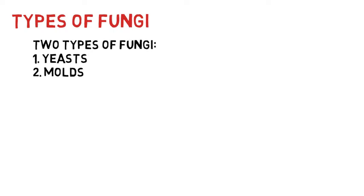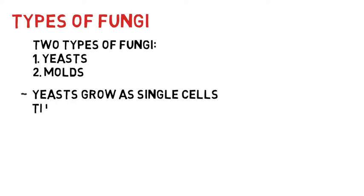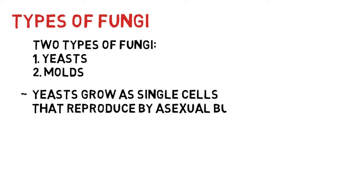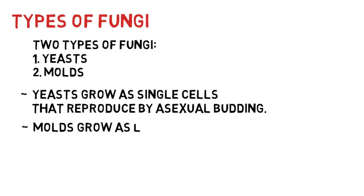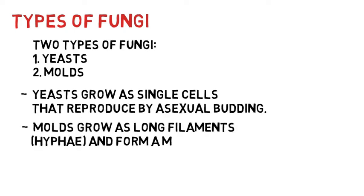There are two types of fungi: yeasts and molds. Yeast grows as single cells that reproduce by asexual budding. Mold grows as long filaments called hyphae, forming mats called mycelium.